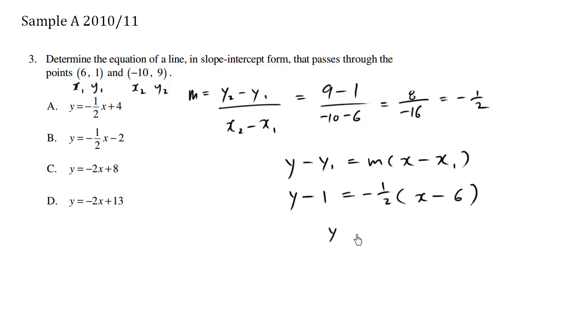So we have y equals, and I'm going to just add the 1 right now so I don't forget about it. We have negative 1 half x and we have a negative times a negative is a positive and we have 1 half times 6 is 3. So we have positive 3 and positive 1 which makes a positive 4.